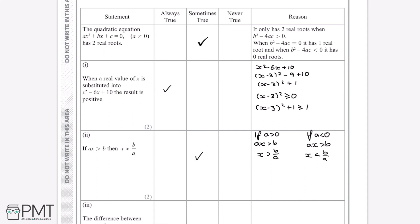And you can try this as well with numbers. If you put in certain numbers for a and b, where a is sometimes negative, you can see that x becomes less than b over a instead of greater than.